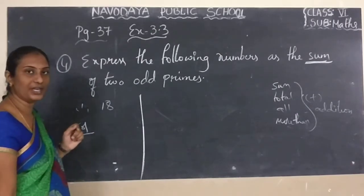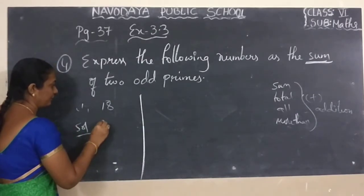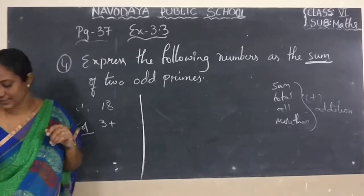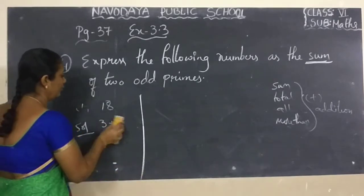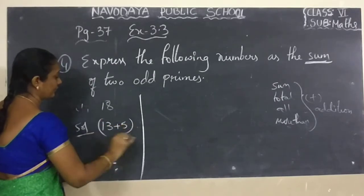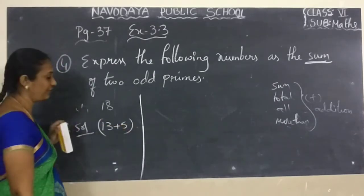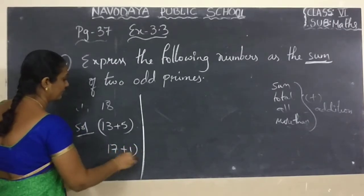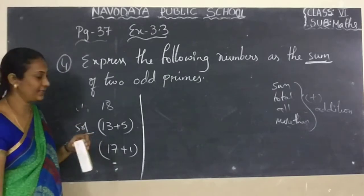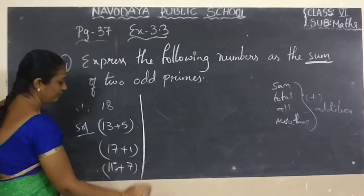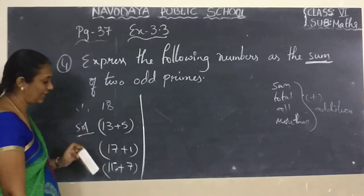18 — how we can write? 3 plus 15: 15 is a composite number, so no. So 13 plus 5. We can write 13 plus 5. One more example: 17 plus 1. Some more example: 11 plus 7. Like this, we have to write.